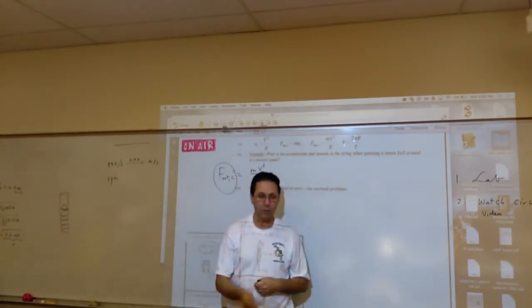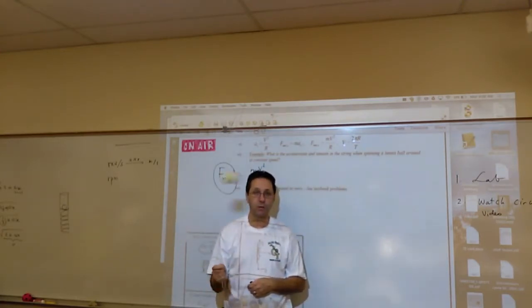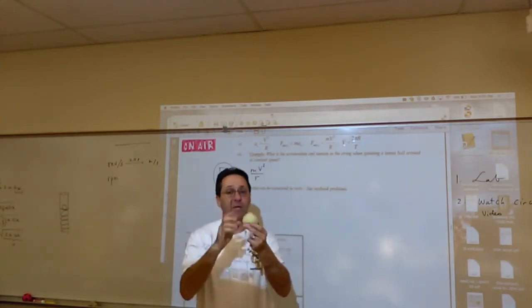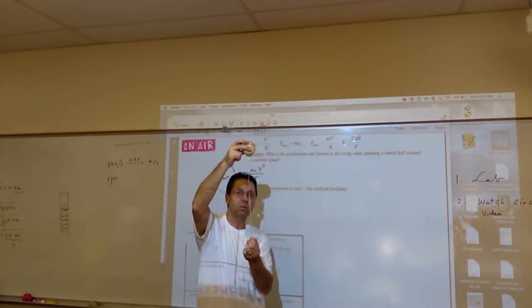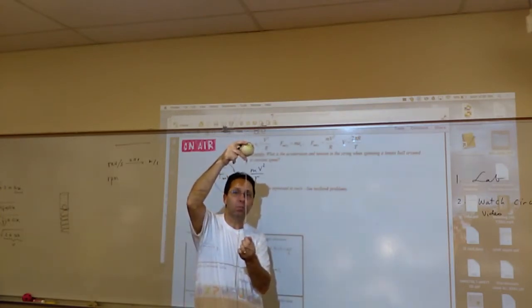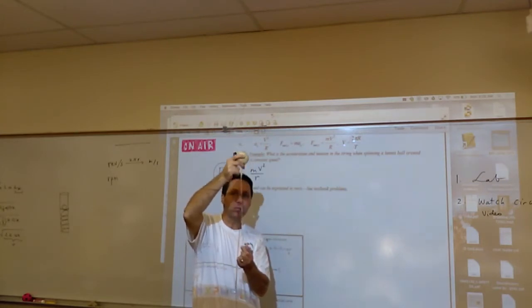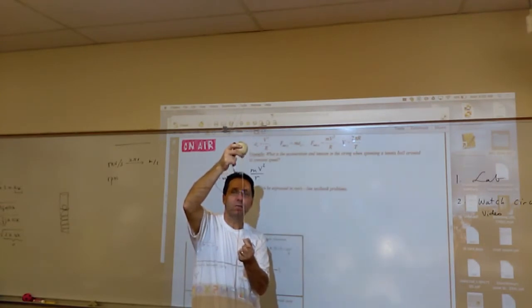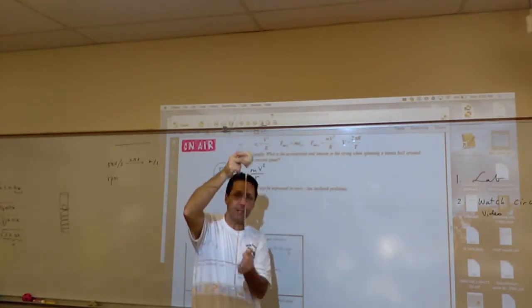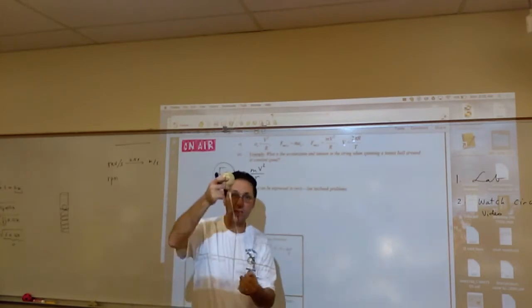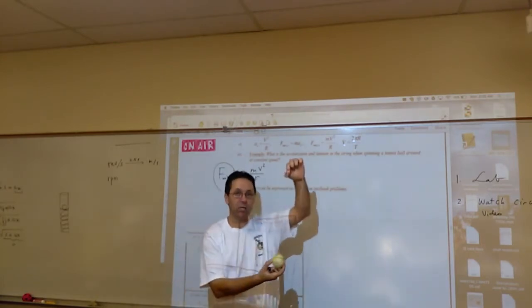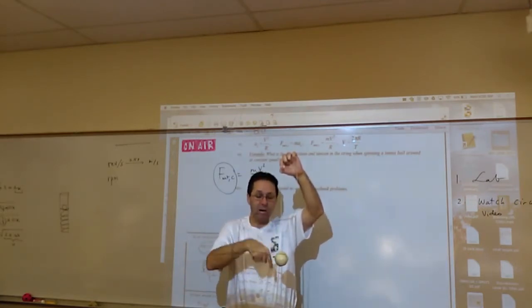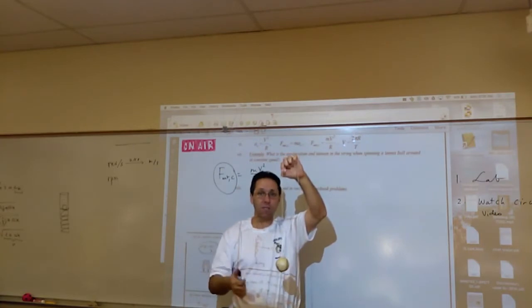If I take this tennis ball and go in a vertical circle, the centripetal force is different at different points. When the ball is at the top, both the weight MG and the tension are pulling down towards the center. When the ball is at the bottom, the tension is going up towards the center and MG is pulling down. So your centripetal force at the top is the sum of those two, and at the bottom it's tension minus MG.